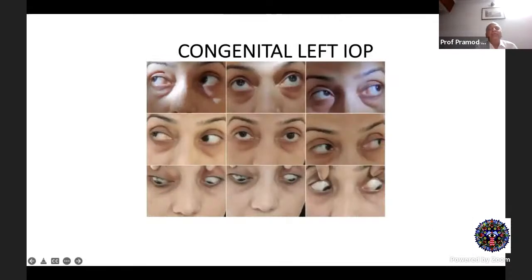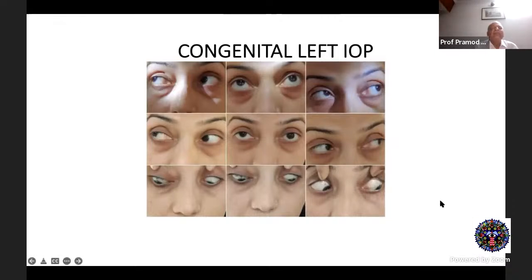This slide shows a case of congenital left inferior oblique palsy. The left eye does not rise, there is superior oblique over-action, and there is an A-pattern esotropia in up-gaze. This is distinct from Brown syndrome — in Brown the eye will not rise even in elevation, producing a V-pattern. Inferior oblique palsy is not a common presentation but is seen occasionally.